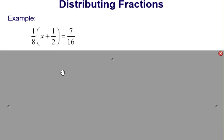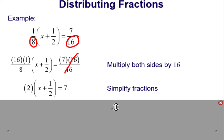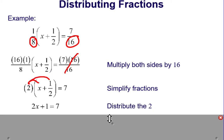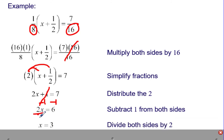Another example: instead of distributing the 1 eighths to the quantity x plus 1 half equals 7 over 16, we can again multiply by the least common denominator. We only need to look at the denominators 8 and 16, so we'll multiply both sides by the common denominator of 16. This simplifies the left side to 2 times the quantity x plus 1 half equals 7. We'll distribute the 2 to have 2x plus 1 equals 7. We'll subtract 1 from both sides, leaving 2x equals 6, then divide both sides by 2 to get our final answer of x equals 3.